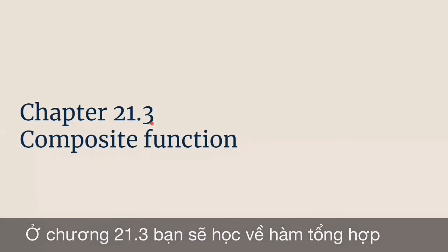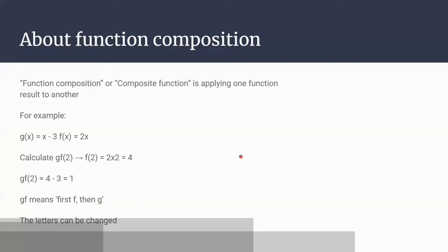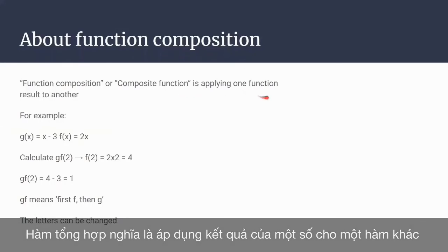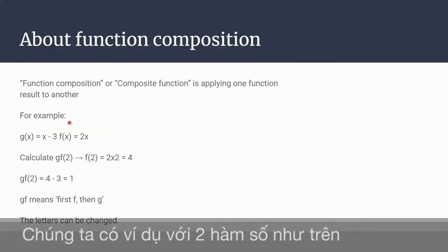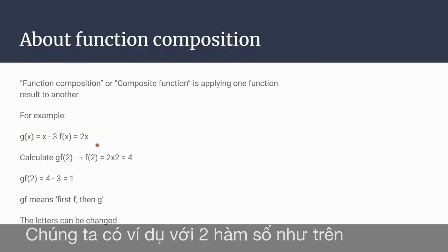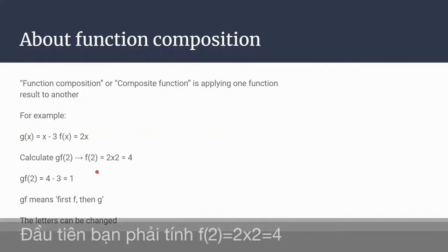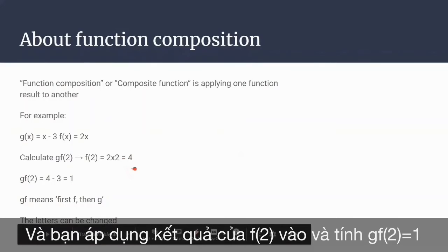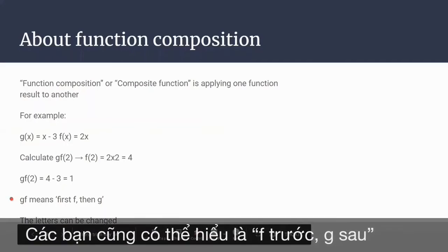In chapter 21.3, you'll study about composite functions. This is some basic information about function composition or composite function — it is applying one function's result to another. For example, g(x) equals x minus 3 and f(x) equals 2x. To calculate g(f(2)), first calculate f(2): f(2) equals 2 times 2 equals 4. Then apply that result to g: g(f(2)) equals 4 minus 3 equals 1. So g(f) means apply f first and then g.